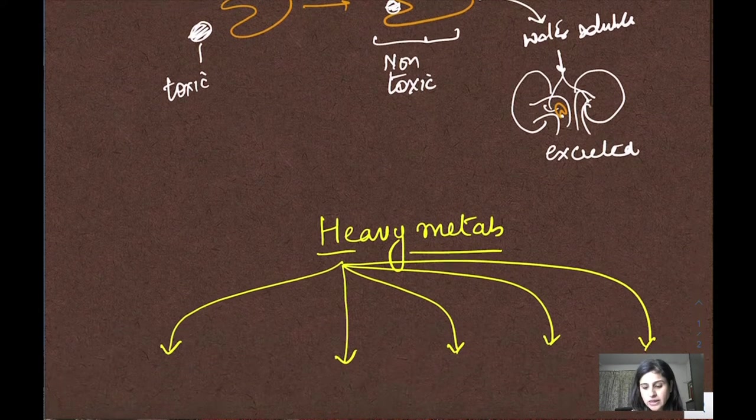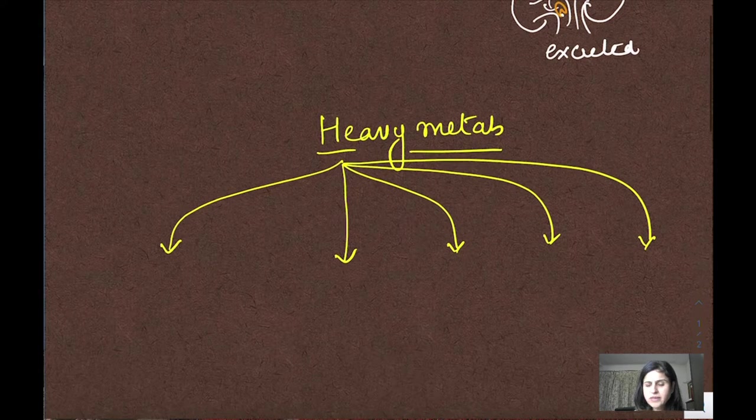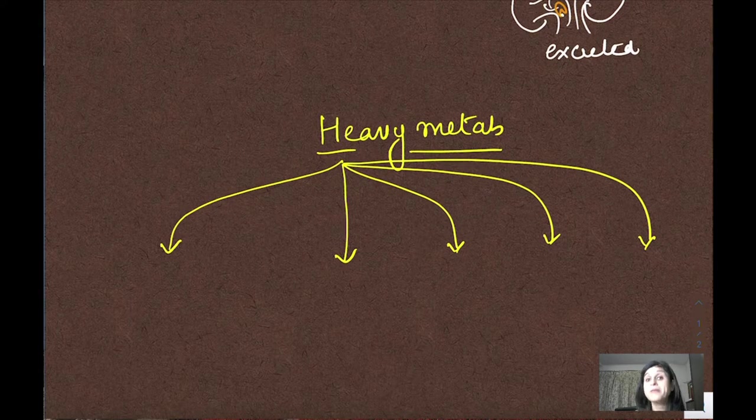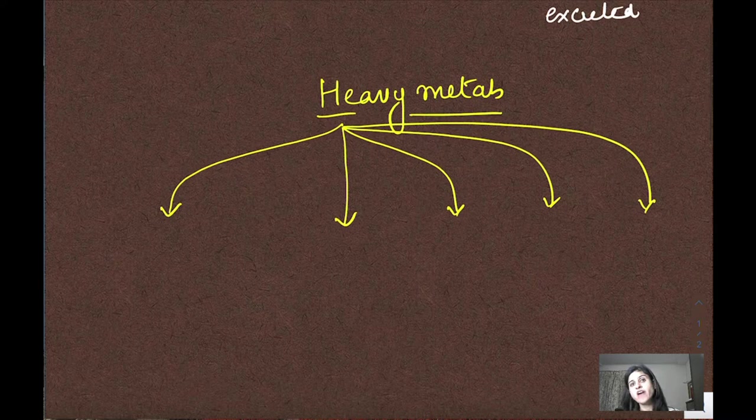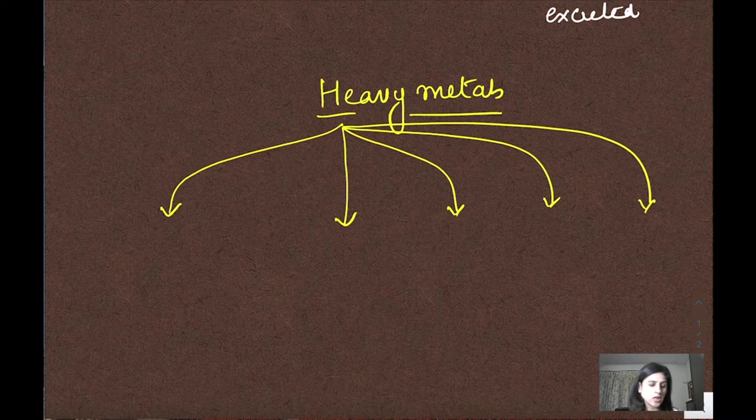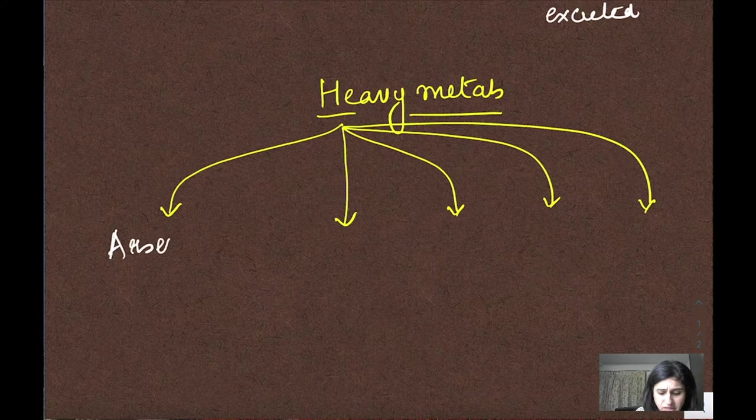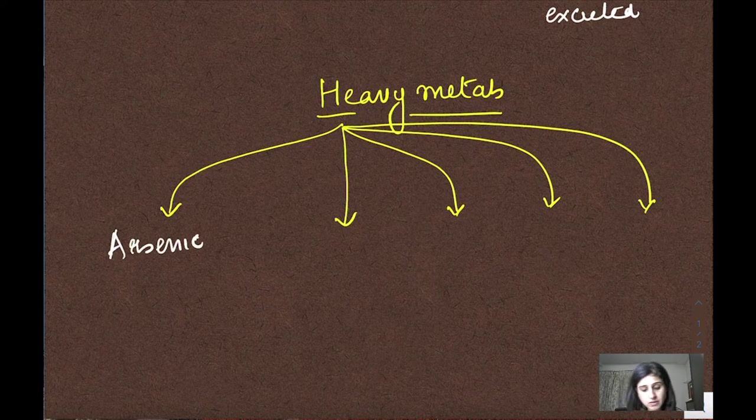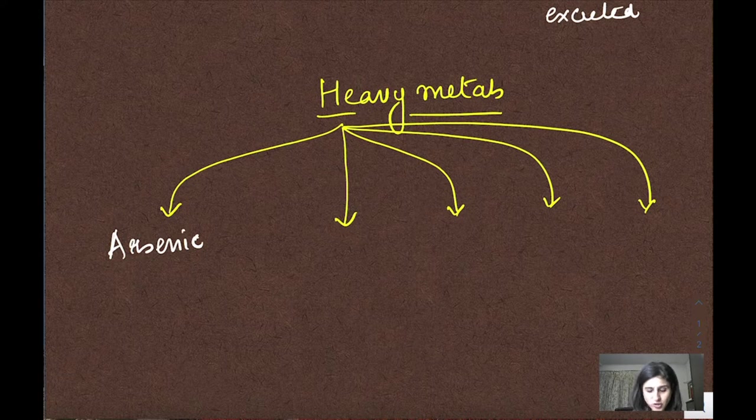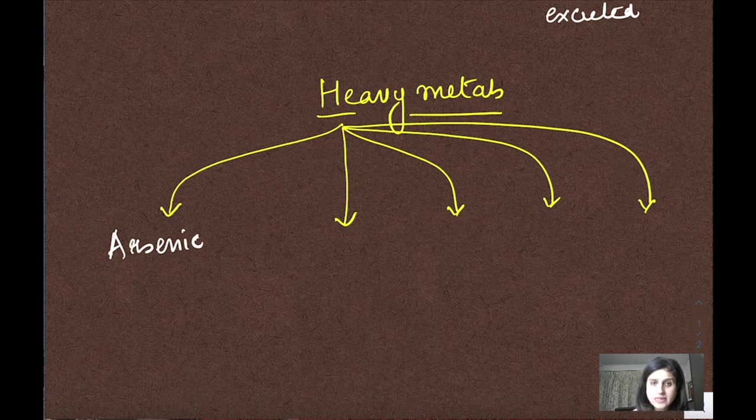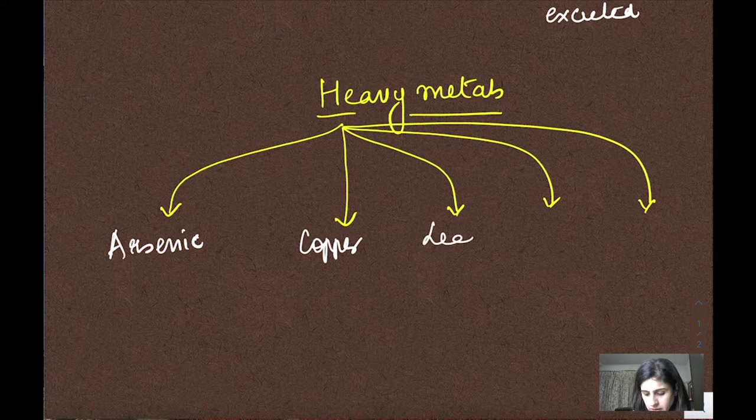They are used in heavy metal poisoning. Heavy metals are found in our environment and surroundings - in food, water contamination, and many places. The important ones are arsenic, copper, lead,